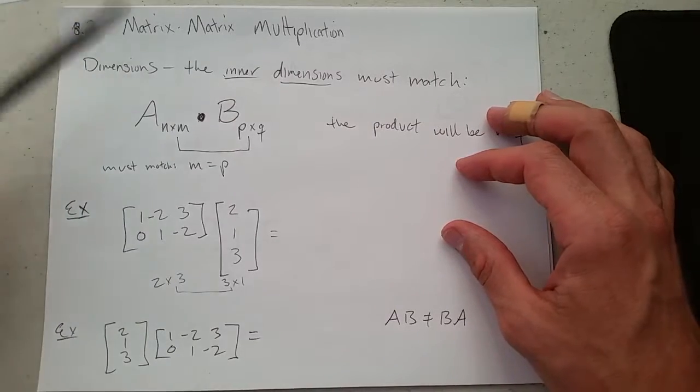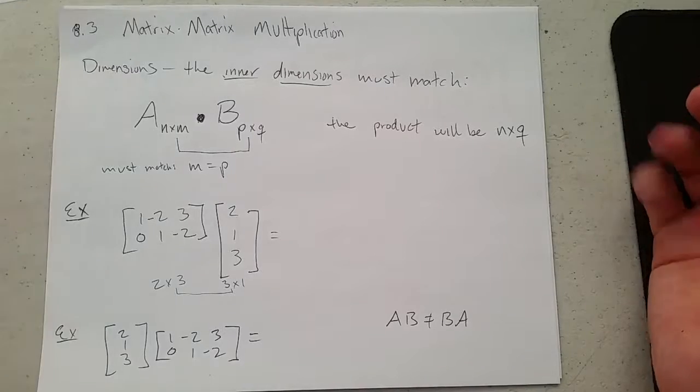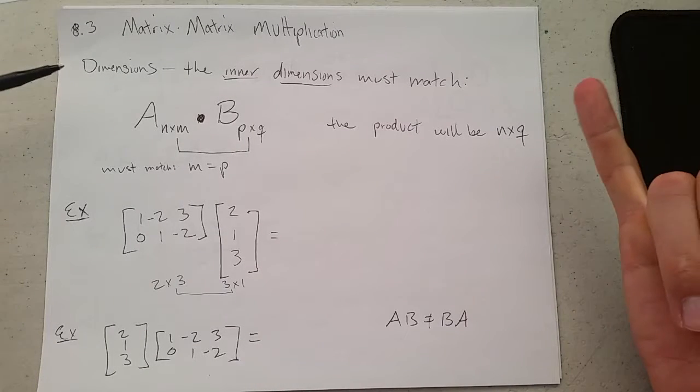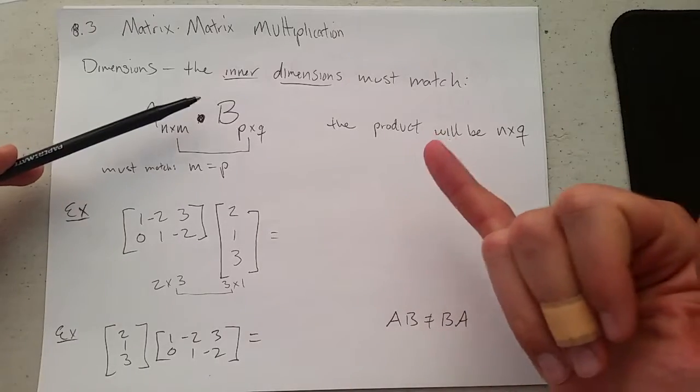Now for the tricky multiplication. This is matrix times matrix multiplication, or just known as matrix multiplication. The dimensions don't have to be completely equal, but the inner dimensions must match.